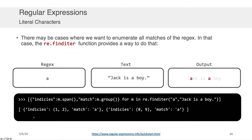There will be instances where you don't just care about finding the first instance of a match, but every instance. The way you do that in Python is through re.finditer. In the code block shown, I'm still searching for the character 'a' in 'Jack is a boy', but by wrapping the result in a list you can identify every instance of the match within the text.